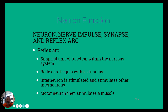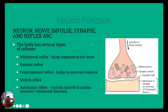Diving into a little more detail on neuron function, there are a lot of different reflexes that can happen based on nervous system reactions: a withdrawal reflex, a somatic reflex, a cross extensor reflex which helps you maintain balance, a stretching reflex, or an autonomic reflex which controls smooth and cardiac muscle and also endocrine function. Something like an injury may stimulate these.